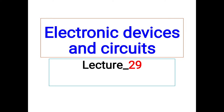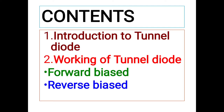Hello friends, welcome to our channel. I am Kapil Chavan and you are watching Technical Academy. This is our lecture number 29 in Electronic Devices and Circuits. In this lecture we will be studying about tunnel diodes — starting with the introduction, then the working principle, and the working of the tunnel diode in forward bias as well as in reverse bias.